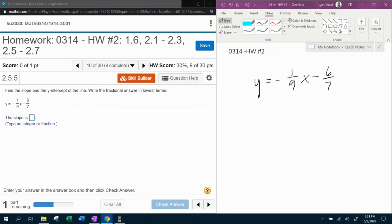Well, we start with the slope-intercept form, y equals m x plus b. So notice that y is already by itself. So the m is the slope, which is negative 1 ninth.